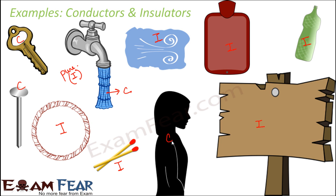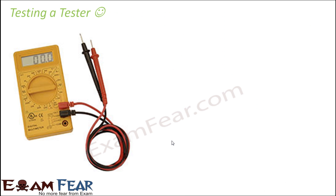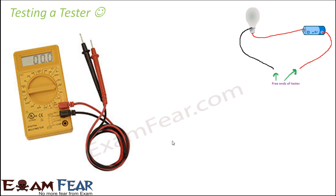Those are some examples of conductors and insulators. Now, if we want to check whether any substance is a good or bad conductor, we can introduce it into a small circuit and see whether current flows through the circuit — that circuit acts as a tester. But how do we know the tester itself is working? This is how: our tester circuit has a bulb and a battery connected together with two free ends left open.